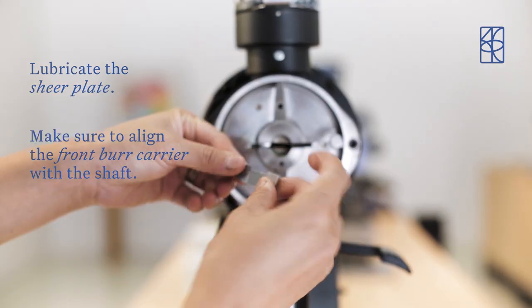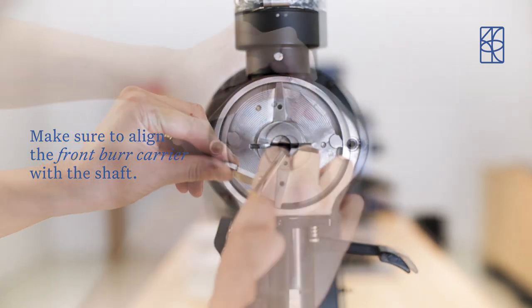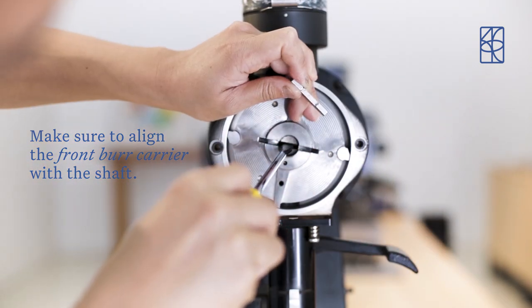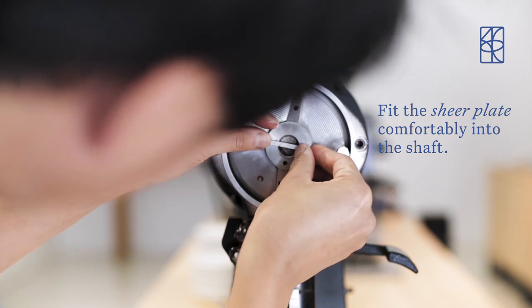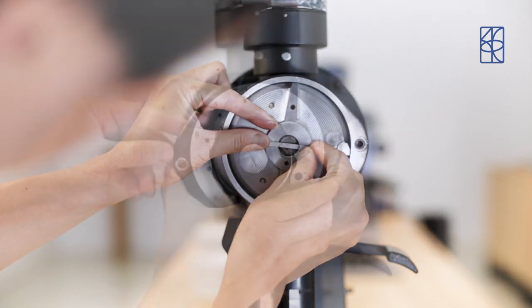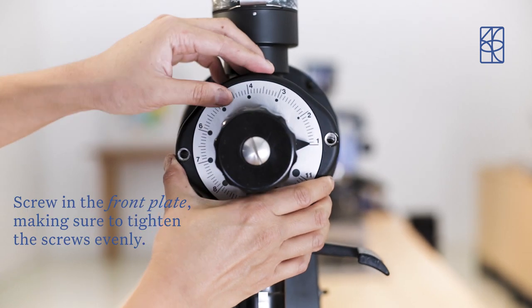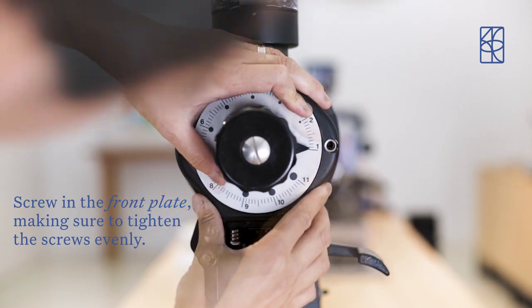Lubricate the shear plate and make sure to align the front burr carrier with the shaft. The shear plate should fit comfortably into the shaft. Screw in the front plate making sure to tighten the screws evenly.